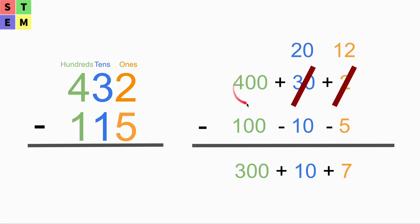We are going to use 400 minus 100 at the hundreds place, and we have 300 here. So in total we have 317.